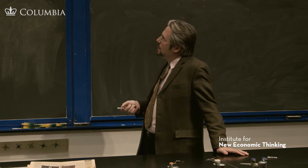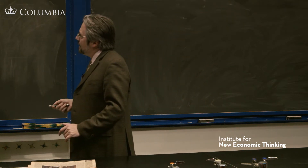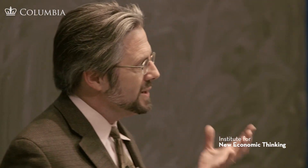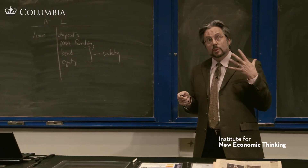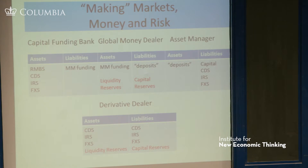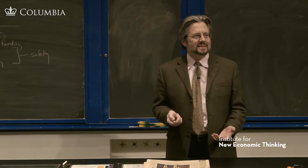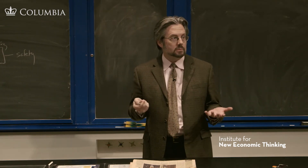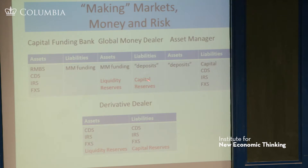The derivative dealer and global money dealer — the distinction we've elaborated in class between a matched book dealer and a speculative dealer is helpful here. A matched book dealer, to the extent they are a matched book dealer, doesn't really need capital but does need liquidity. So liquidity reserves are important for the matched book part of the system. But if you are a speculative dealer, you need to be able to absorb losses, and that means capital.